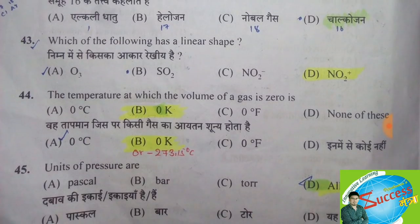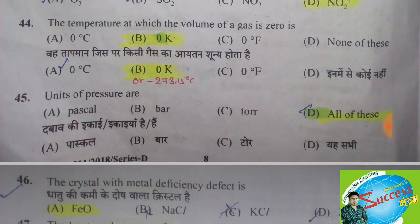The temperature at which the volume of a gas is zero — the correct answer is option B, zero Kelvin. Zero Kelvin is equal to minus 273.15 degrees centigrade.